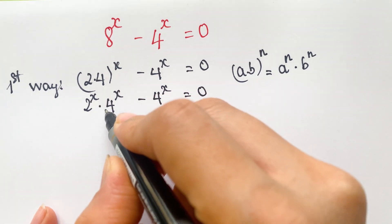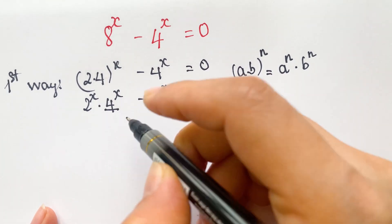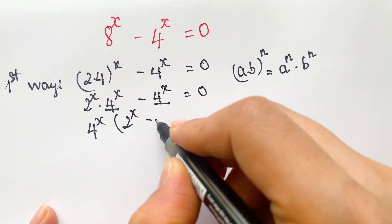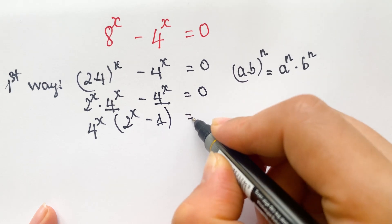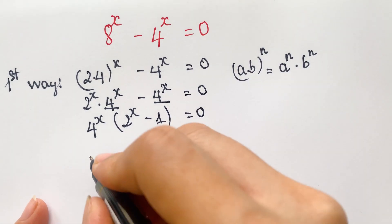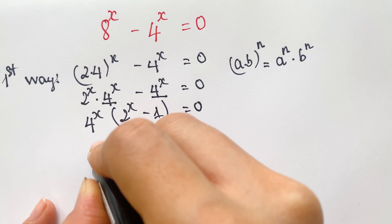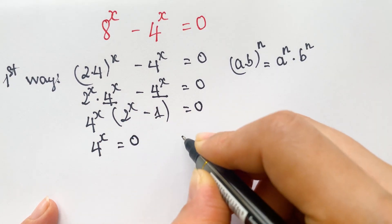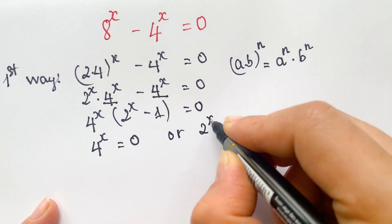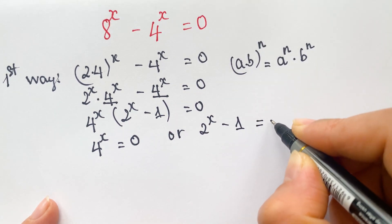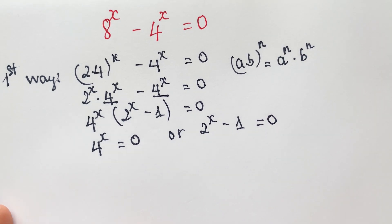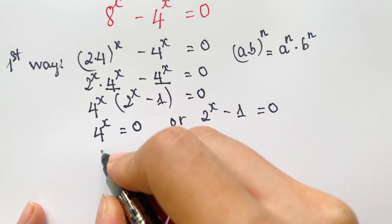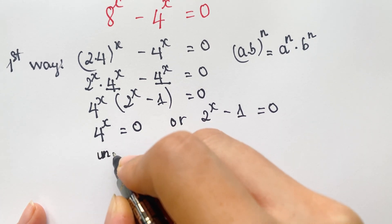So we factor out the common factor 4 power x: 4 power x times (2 power x minus 1) is equal to 0. Then we have 2 cases: 4 power x is equal to 0, or 2 power x minus 1 is equal to 0. In this first case, 4 power x equals 0 is undefined.